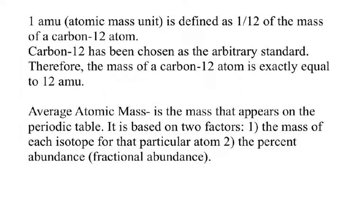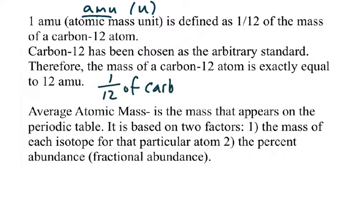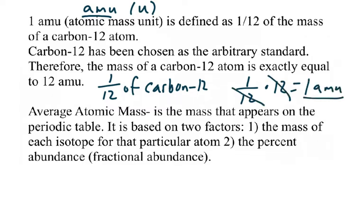An AMU is defined as being one-twelfth of the mass of a carbon-12 atom. Some textbooks abbreviate AMU with just the symbol U, so you might see either AMU or just U. That means carbon-12 has a mass equal to 12 AMU. One-twelfth of 12 — the word 'of' can be represented by multiplication — one-twelfth times 12 equals 1, and that's how we get the definition of an atomic mass unit, based on carbon-12 as an arbitrary standard.